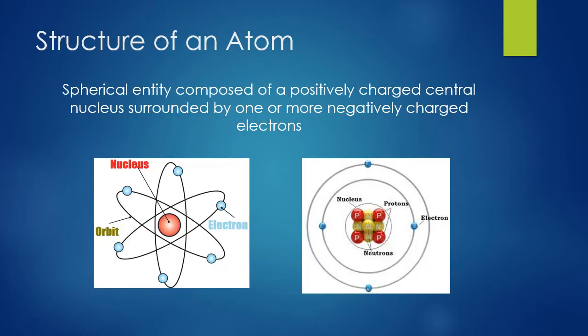Here are two depictions of atoms. We can see the center nucleus in both. In the picture on the left, there's just a red center representing the nucleus. In the picture on the right, the nucleus is still the center, but you can see the individual subatomic particles — the protons and neutrons. The electron cloud on the outside is where the electrons are, and the electrons are actually orbiting that nucleus, traveling around it.